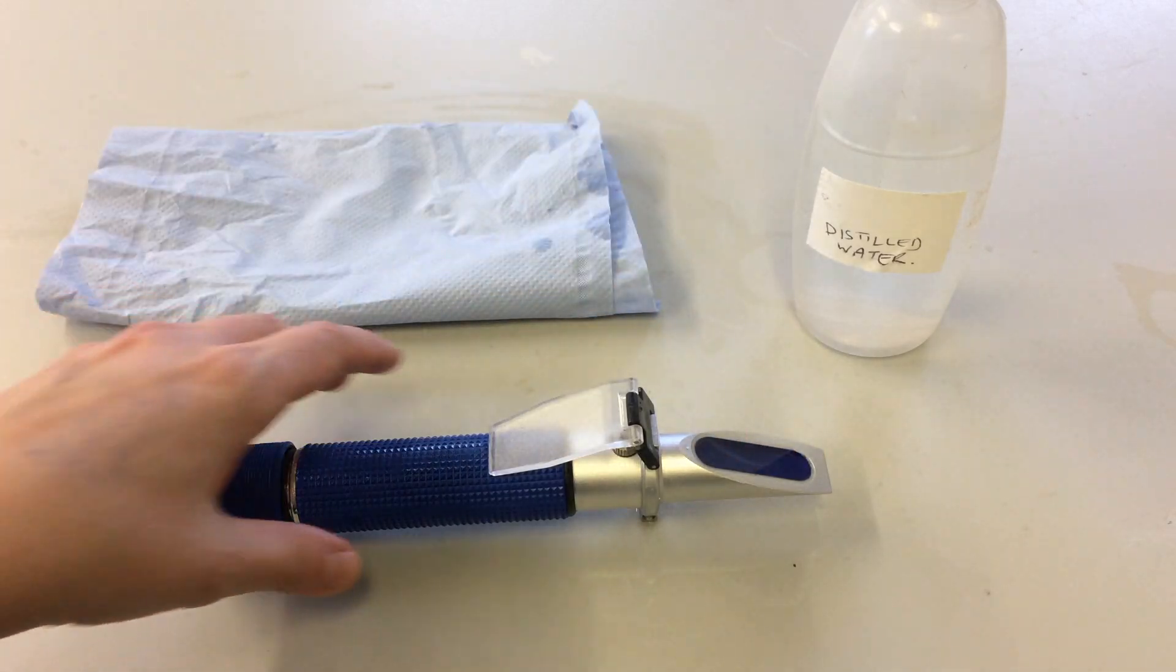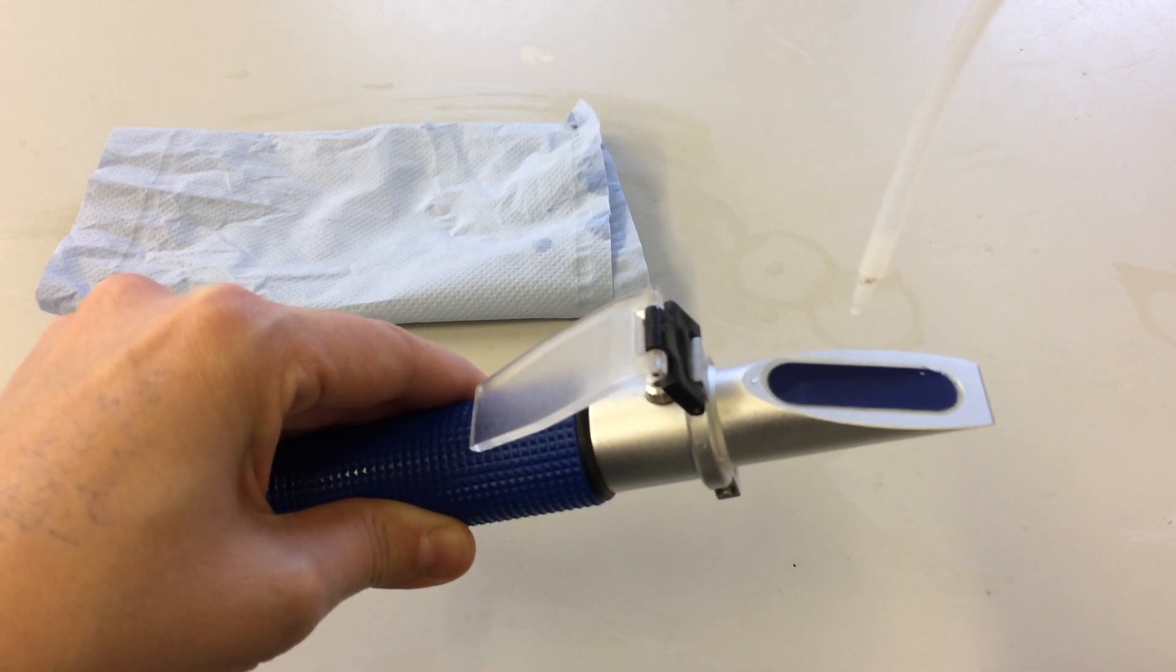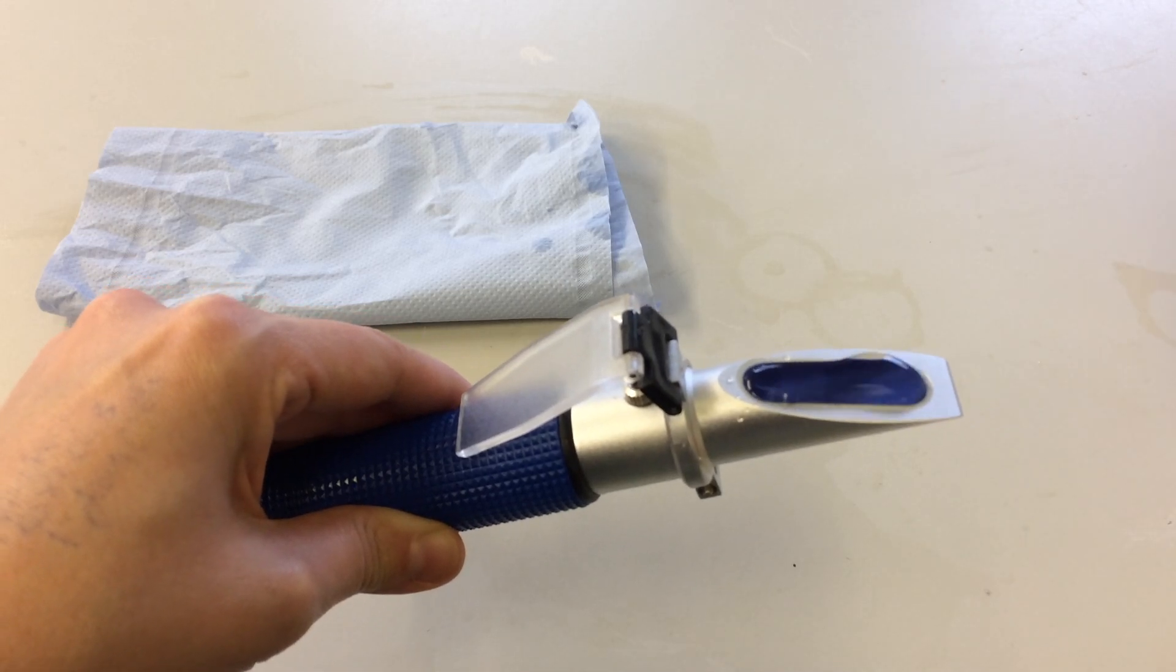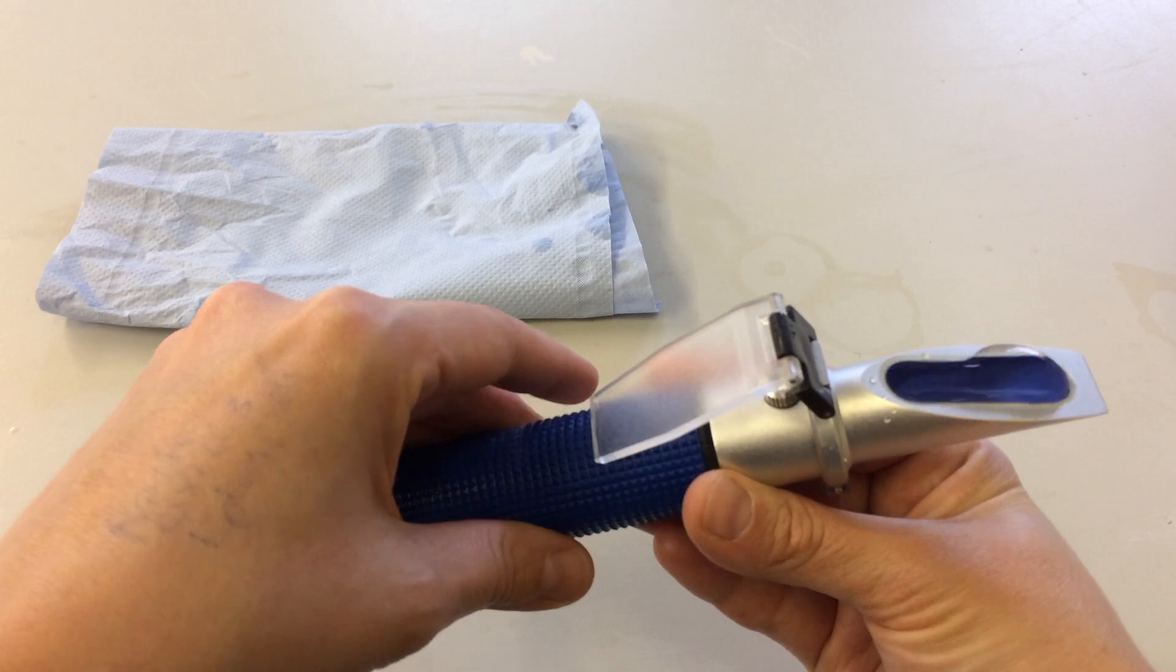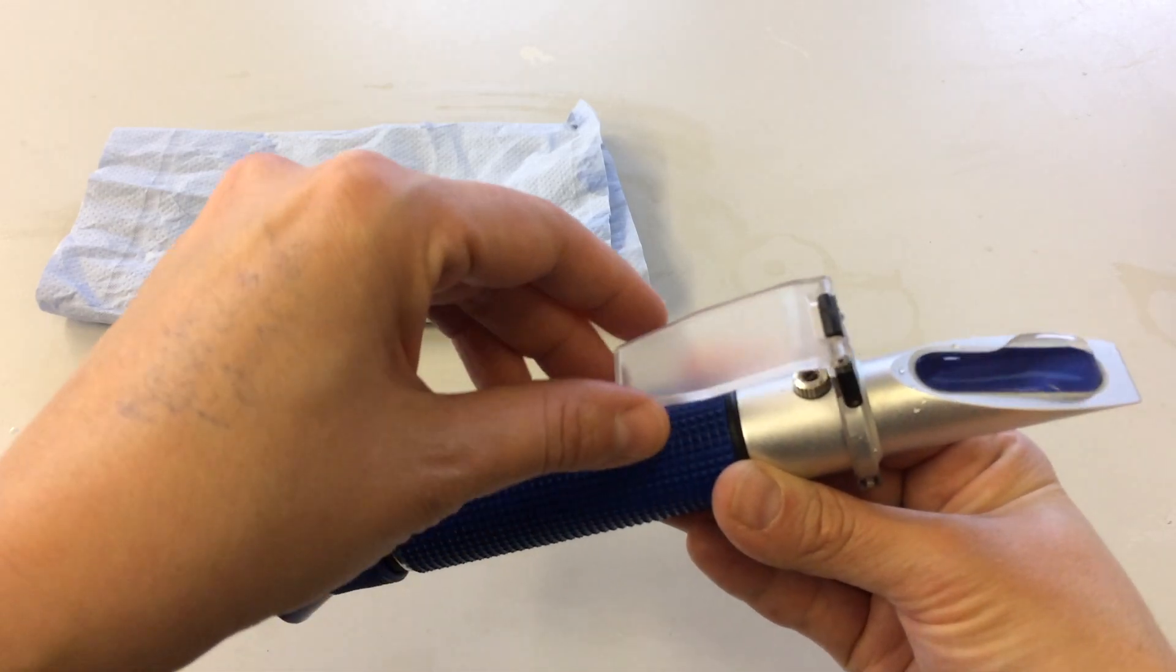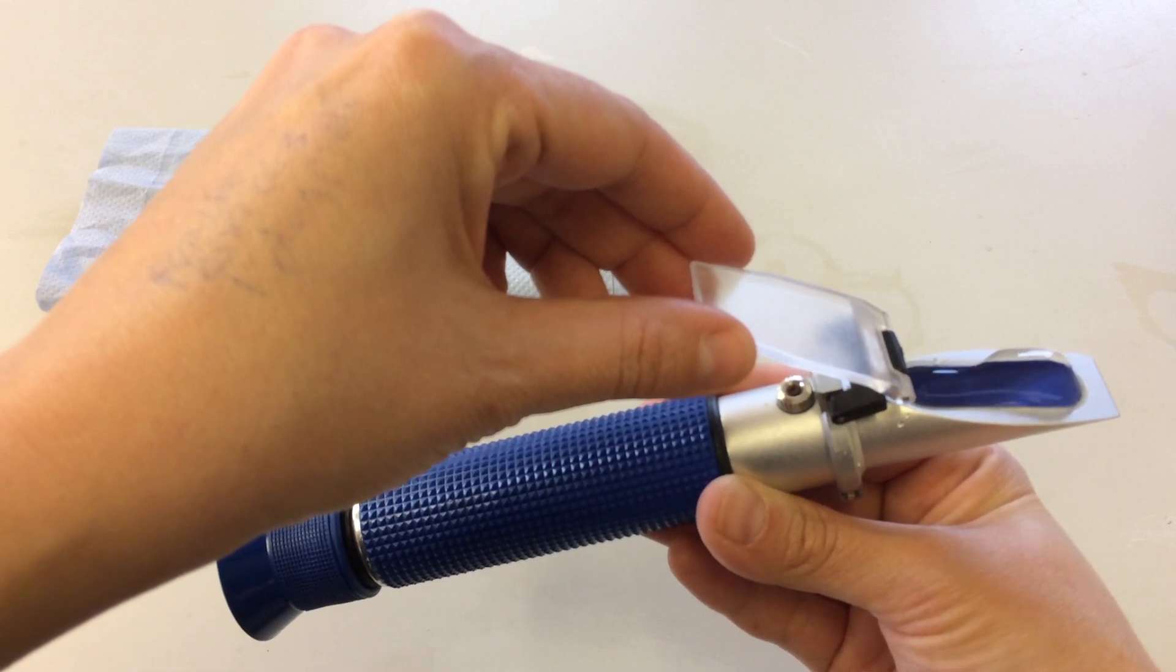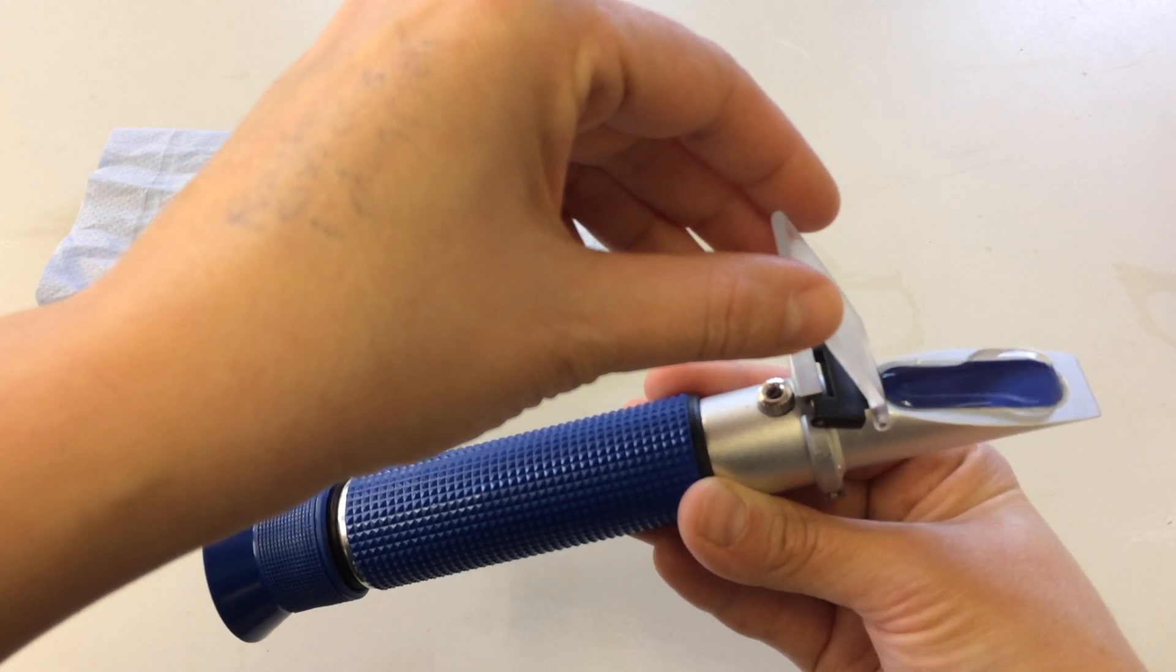Now it does take a bit of practice when you haven't done this before, but using the distilled water, you can just create a nice big film there. Then, using the cover plate, you need to squash your sample between the cover plate and the glass section that the water's on, but you need to do this without creating air bubbles. So it does take a bit of practice.